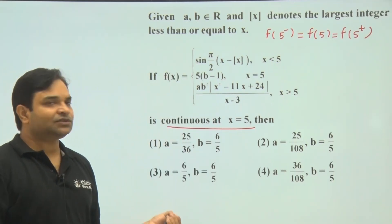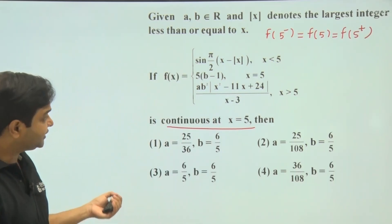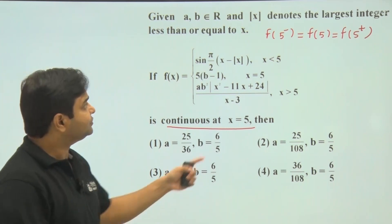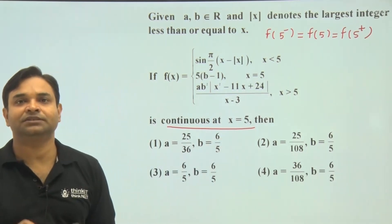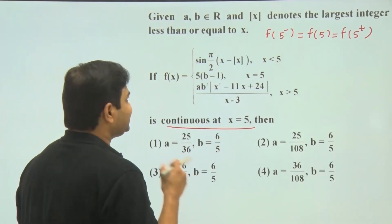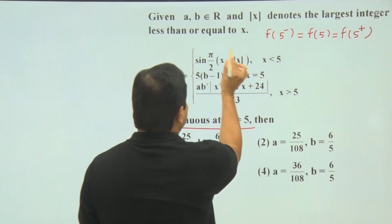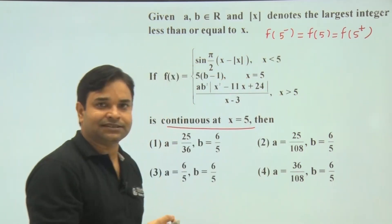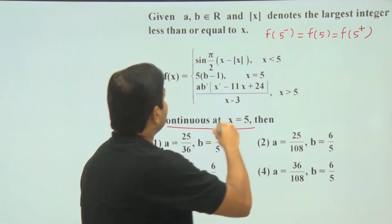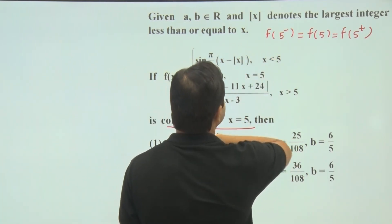As in this question it is given that this function is continuous, so LHL, value of function, and RHL all three must be equal. So let's calculate. For LHL, when x is less than 5, because 5 minus is less than 5, we have to calculate from this definition.